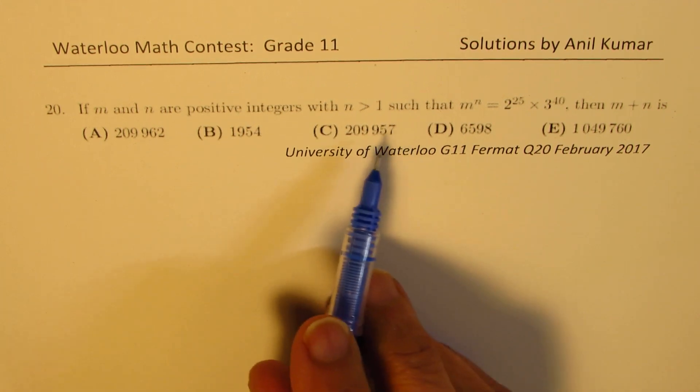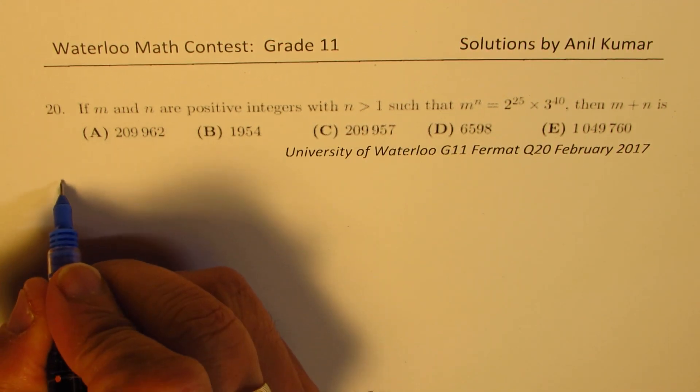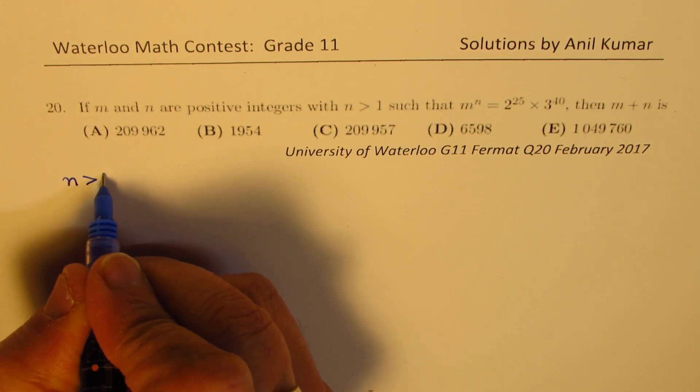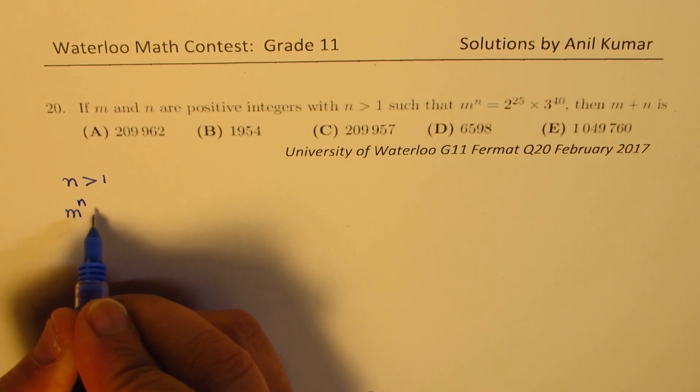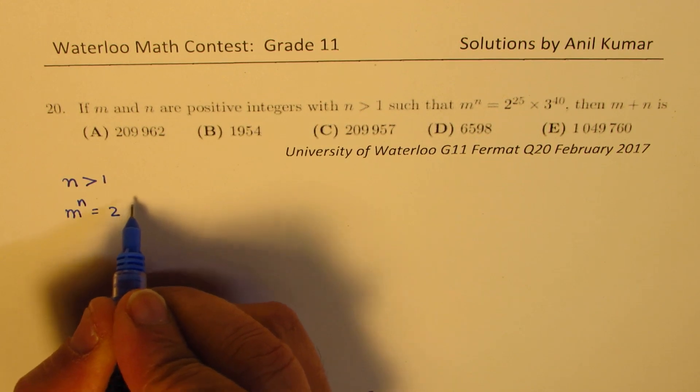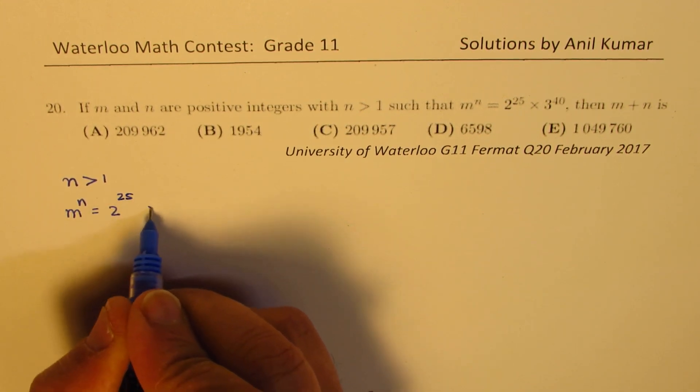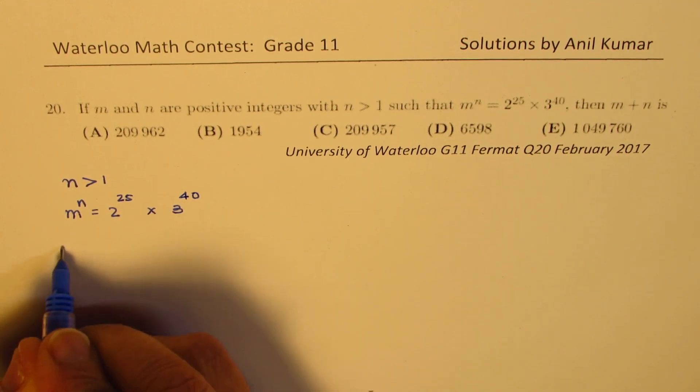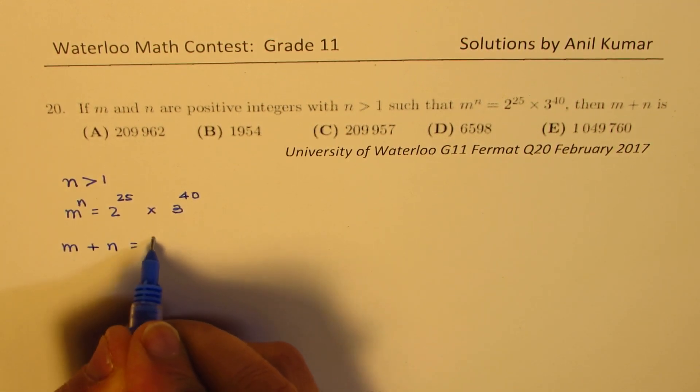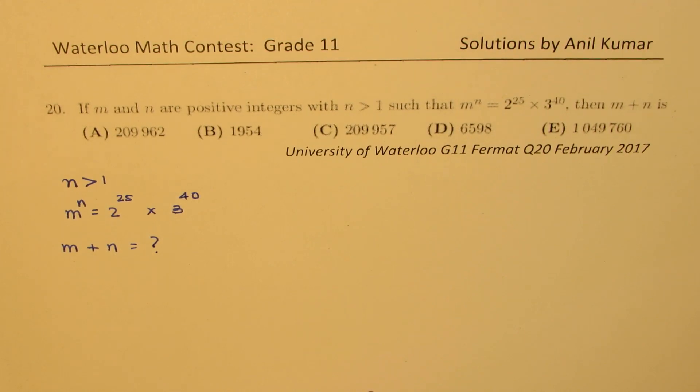Sorry for that bad print, but let me rewrite this. So what we are given here is that n is greater than 1. We are also given that m^n is 2^25 times 3^40. And what we need to figure out is what is m plus n equal to. So that is the question which is given to us.